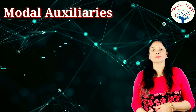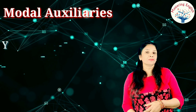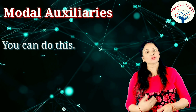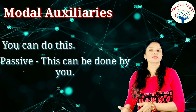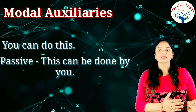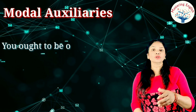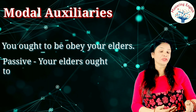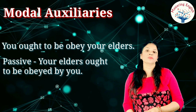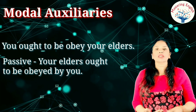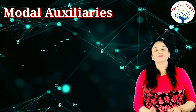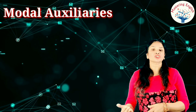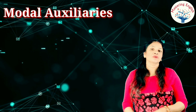For example: 'You can do this' — in passive voice it becomes 'This can be done by you.' The pattern for modals is: can→can be, could→could be, should→should be, may→may be, ought to→ought to be, will→will be, would→would be, shall→shall be. We will keep changing every sentence using modal auxiliaries from active to passive voice.